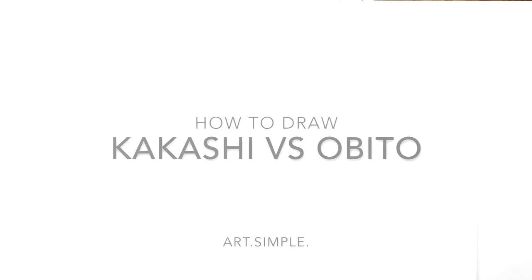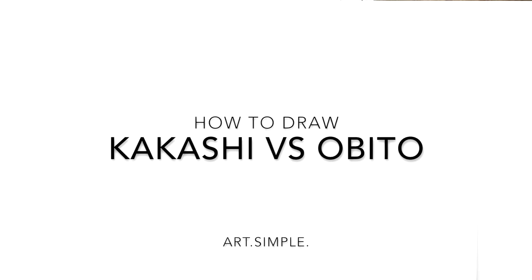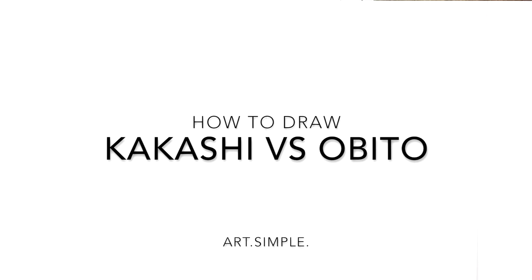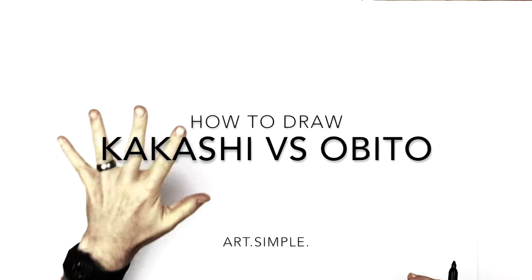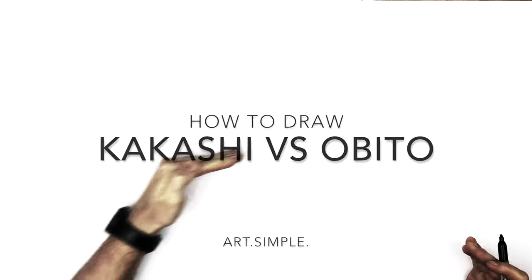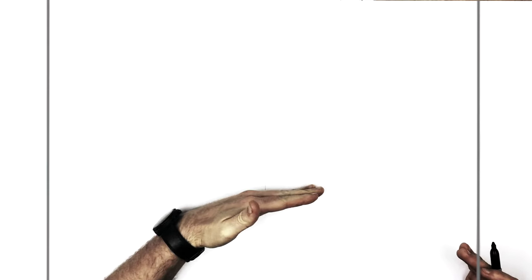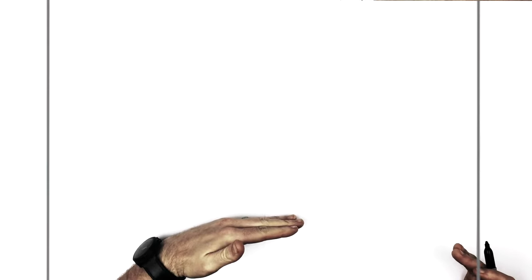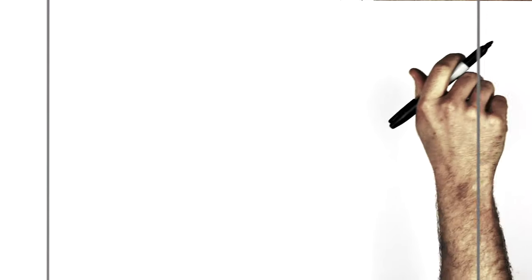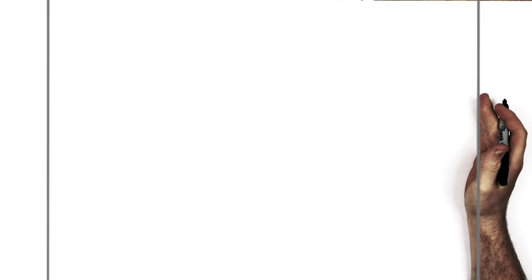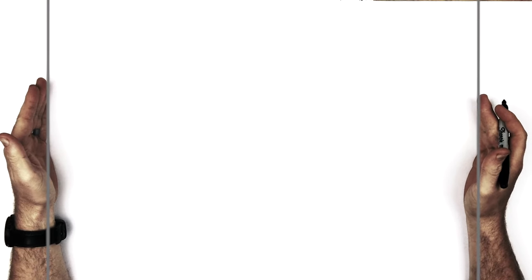Hey everybody, welcome back to another drawing tutorial. Today we have Naruto — Kakashi versus Obito. It's from the video game Ninja Storm, so it's like Obito coming at Kakashi. He's got one of those metal bar weapons coming out of his hand. Use a landscape page, white page, and a pencil.